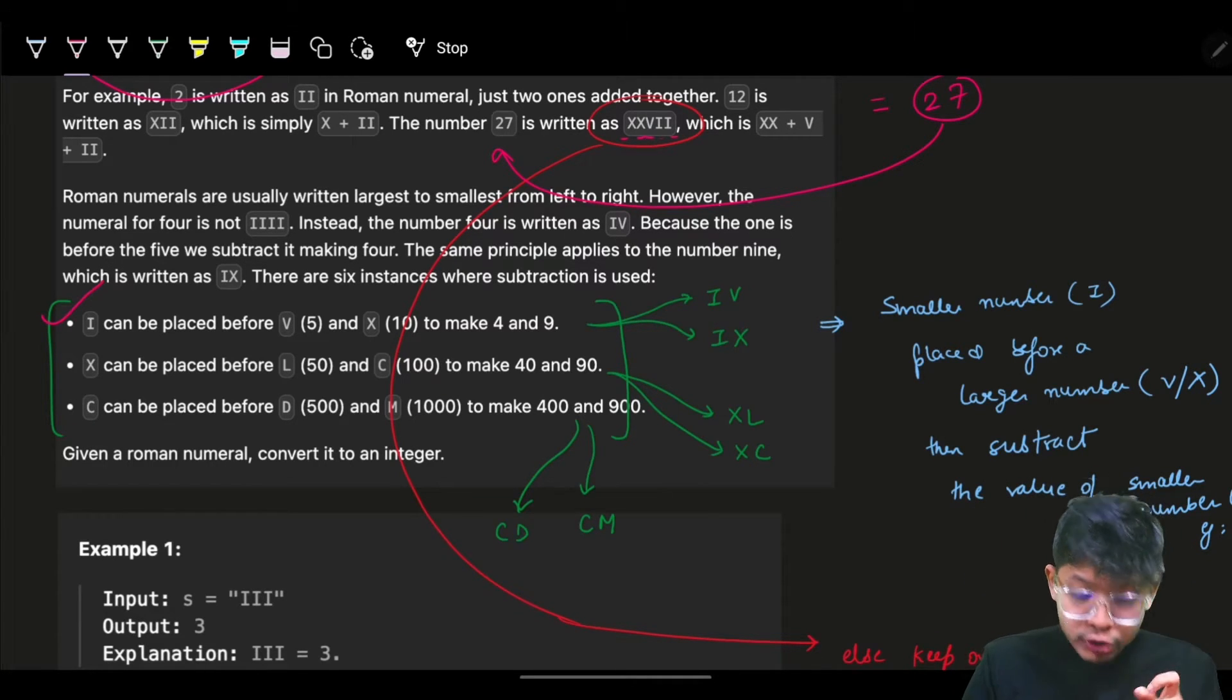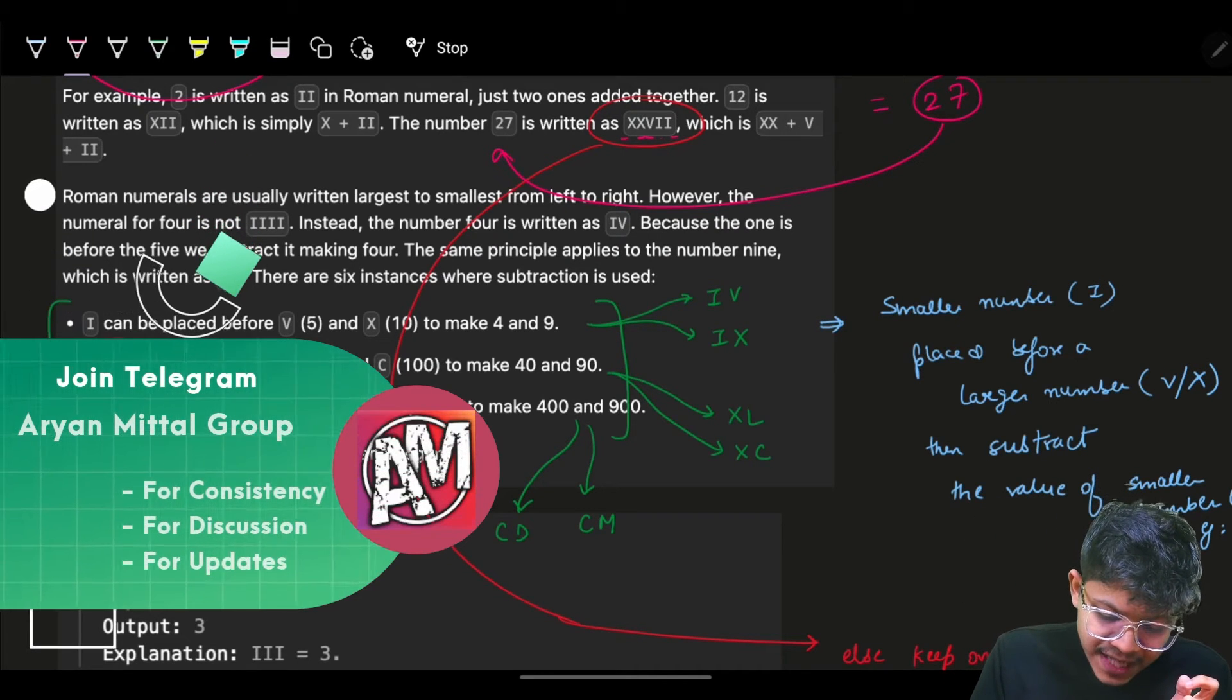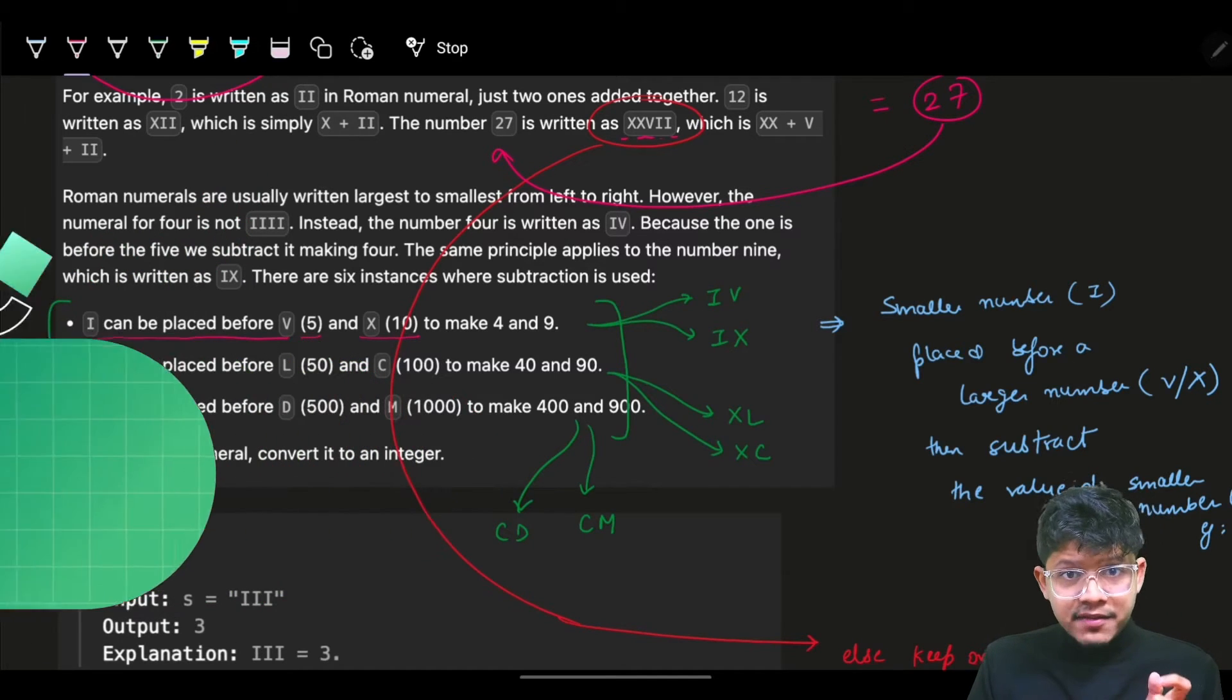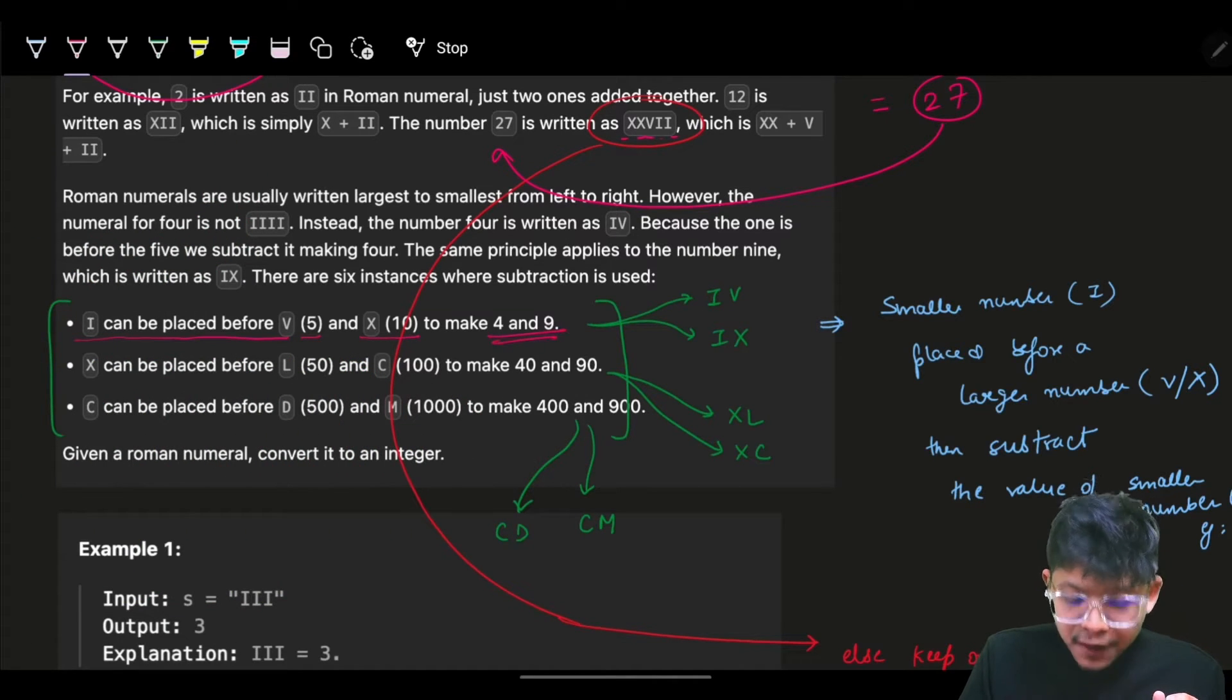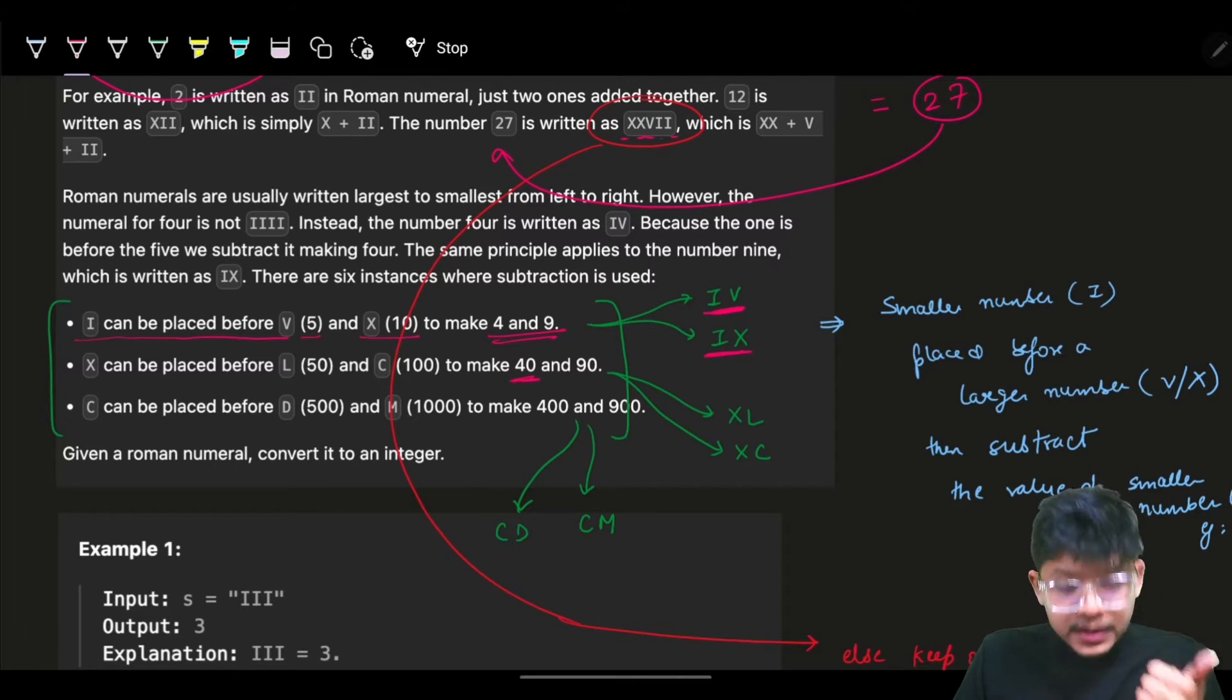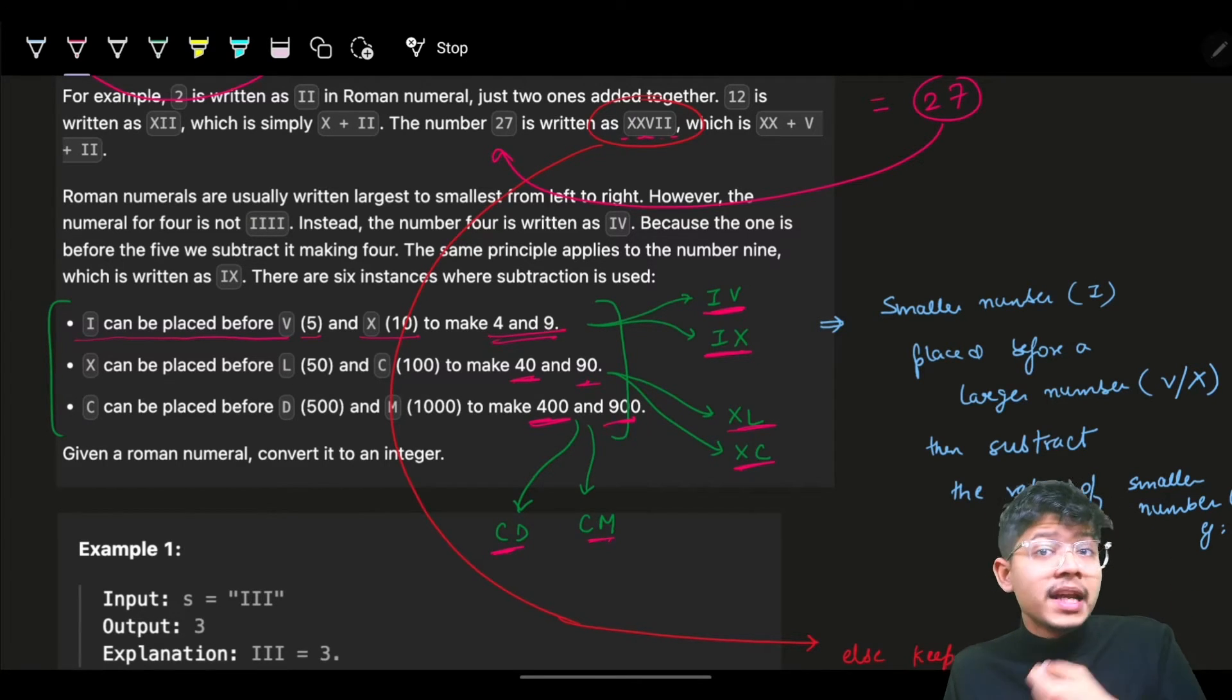It says that I can be placed before V (5) and X (10) to make 4 and 9. To make 4 you place I before V, for 9 you place I before X. Same way, to make 40 you place X before L, 90 is X before C. To make 400 you place C before D, and C before M to make 900.